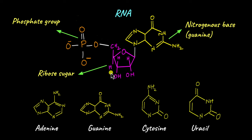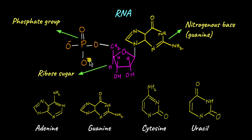Now that we have understood the basic structures of RNA and DNA, let's finish answering the question: why are they called nucleic acids? Look at the phosphate group — it contains oxygen atoms, and these oxygen atoms have a negative charge on them. This negative charge imparts acidic properties to the molecules, which is why RNA and DNA are called nucleic acids.